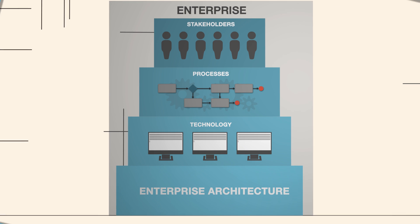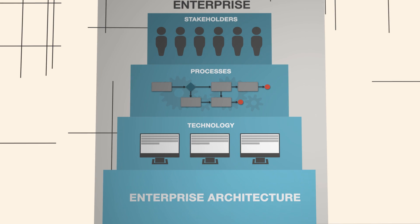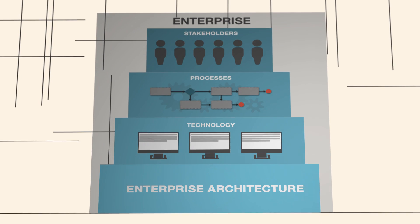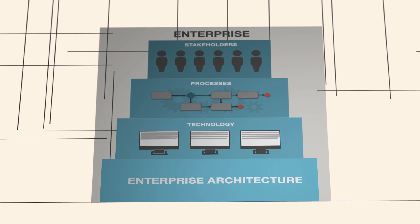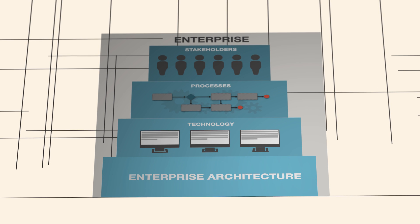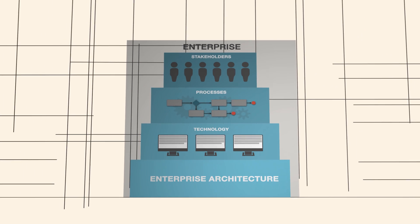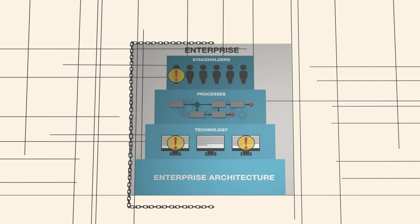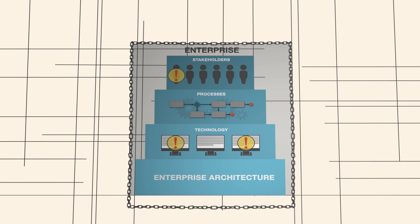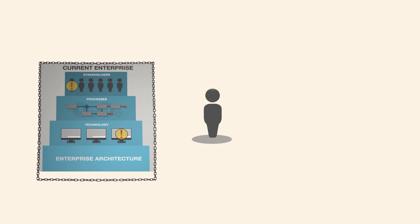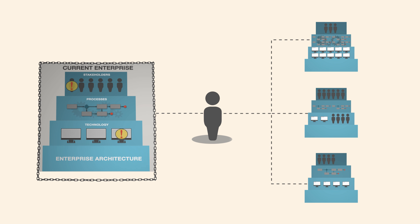Enterprise architecture provides a specific approach for understanding and describing the structure of an enterprise in a rigorous way. This gives us a big-picture view of the constraints and limitations imposed by the current structure of the enterprise. Architects can then show what options exist to change or make improvements by embedding better target structures.